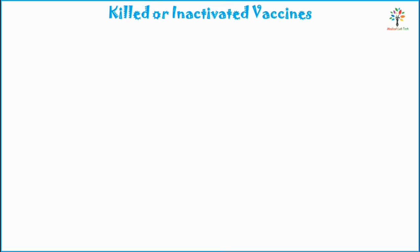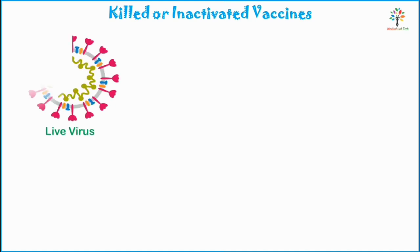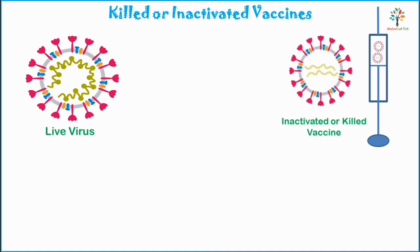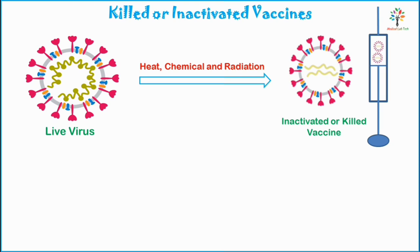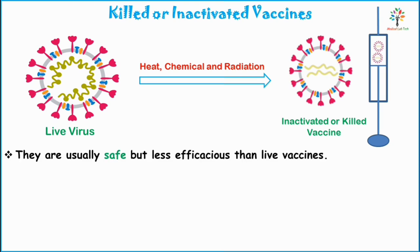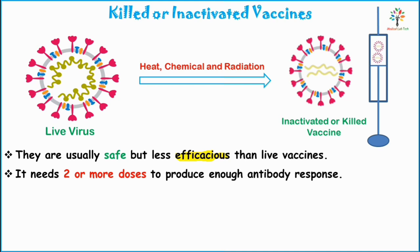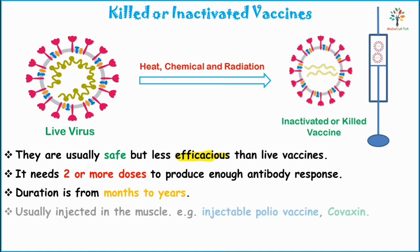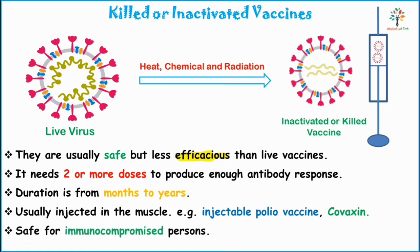Next is the killed or inactivated vaccine. This contains an inactivated or killed organism — virus or bacteria. You may inactivate or kill the organism using heat, chemicals, or radiation. These vaccines are generally safe but less efficacious than live vaccines. Killed vaccines need two or more doses to produce enough antibody response, and their duration of protection may range from months to years. They are usually administered into the muscle. Examples include the injectable polio vaccine and Covaxin, prepared by Bharat Biotech in India, which provides protection against COVID-19. Inactivated or killed vaccines are safe for immunocompromised persons.